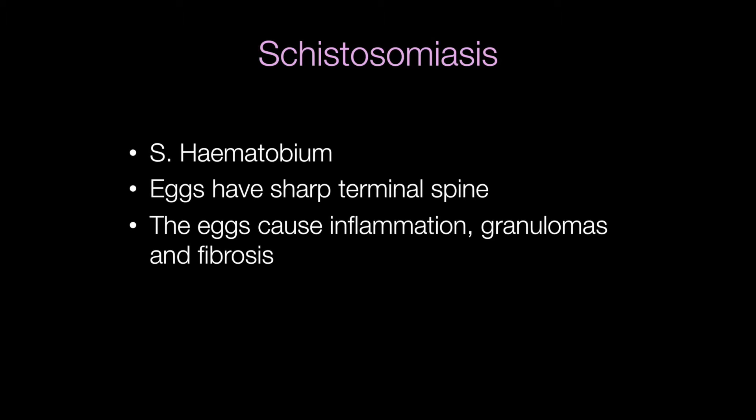It is the eggs that cause the problems with schistosomiasis — they cause inflammation, granuloma formation, and fibrosis.